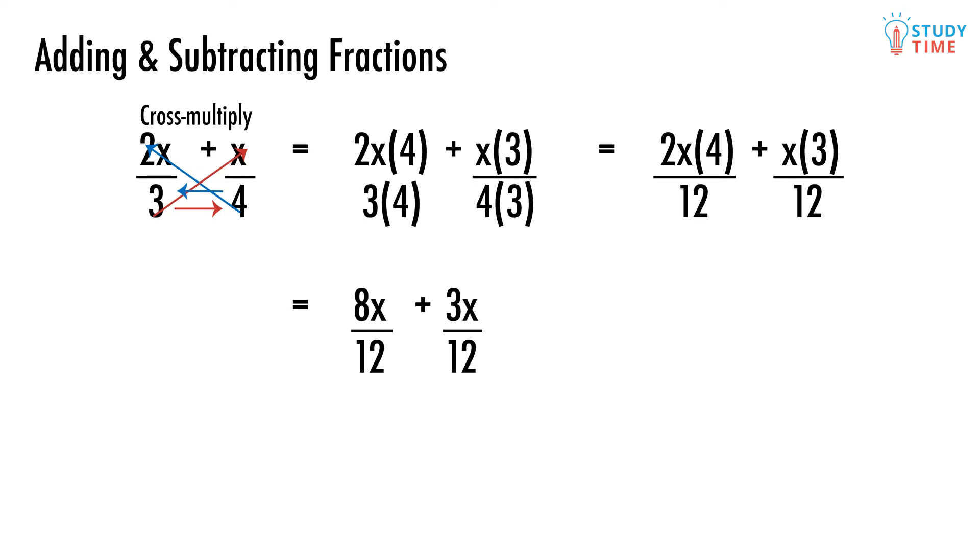So we still have two fractions, but now because they have the same denominator, we can do this. See how those brackets come in handy? They're just saying that everything on top is being divided by 12. Can we simplify this fraction any further? Yes, we can add 8x and 3x, which gives 11x.